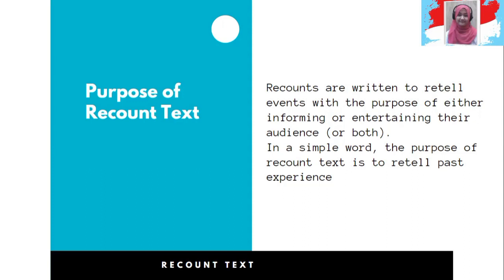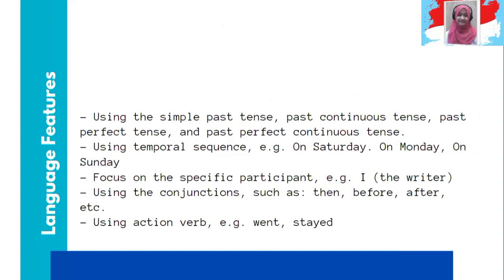Present simple tense — penggunaan to be misalnya is and are, or verb as. So I'd like you later in your text analysis to show how the text uses past tense and how it uses present simple, and why. Using past simple tense, ada past continuous tense, past perfect, past perfect continuous — semuanya dalam bentuk lampau. Using temporal sequence — penunjuk waktu, time indicator: on Saturday, on Monday, on Sunday, juga last week, last month, last year, a minute ago, two days ago, in 1991.